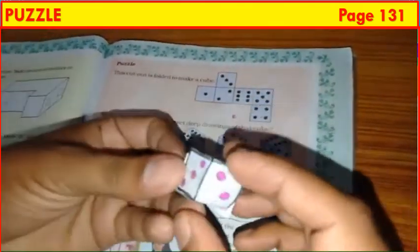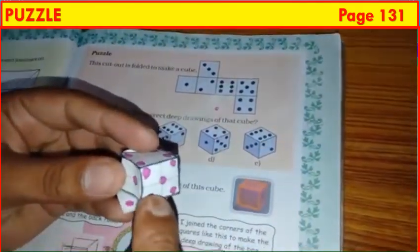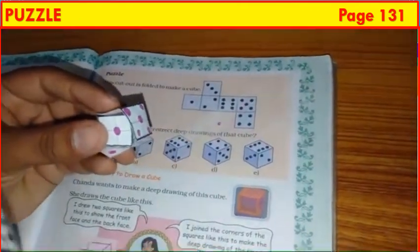Now, consider figure D. Top has 4. Left side has 1. And right side has 5. So, figure D is correct. So, put a tick mark.